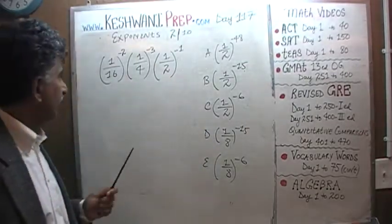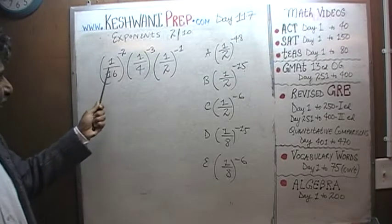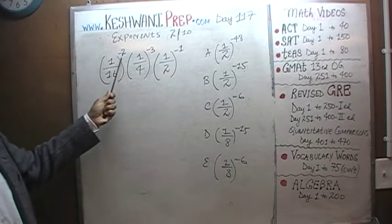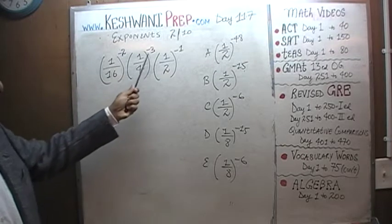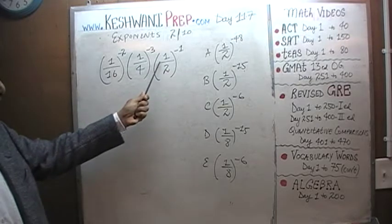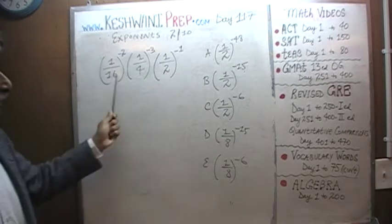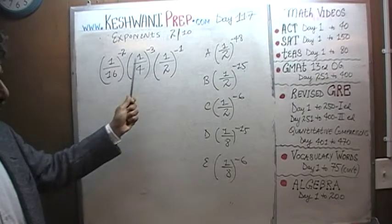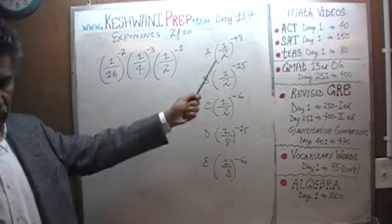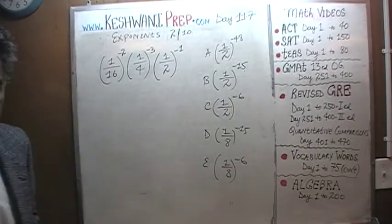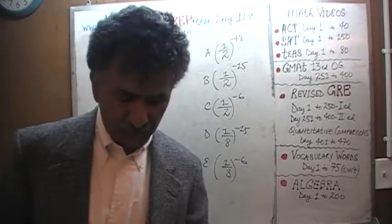Do you understand? Here's the problem. 1 sixteenth raised to negative 2, times 1 fourth raised to negative 3, times 1 half raised to negative 1. We are being asked to simplify this. That's it. I'll give you 5 seconds to pause and unpause the video.